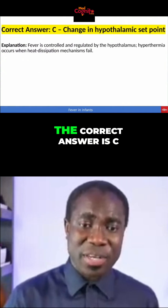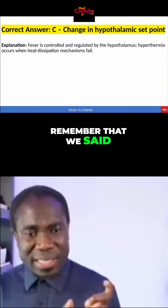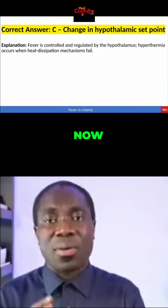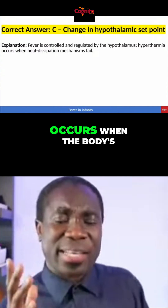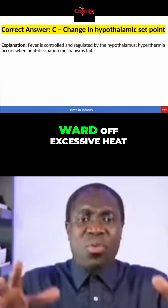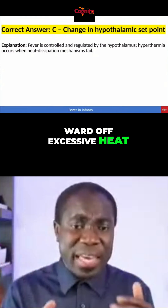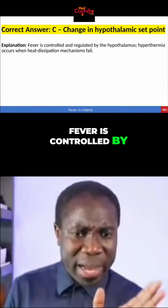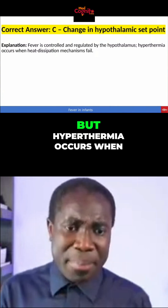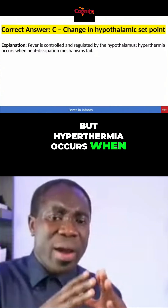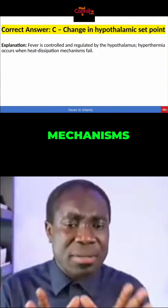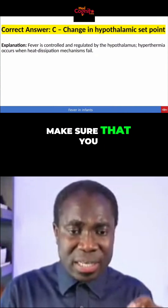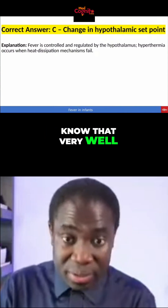Doctors, it looks like everybody got it wrong. The correct answer is C. Remember that fever is controlled by the hypothalamus. Hypothermia occurs when the body's ability to hold off excessive heat is overcome — that is, when heat dissipation mechanisms are overwhelmed. So please make sure that you know that very well.